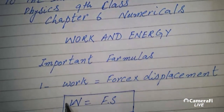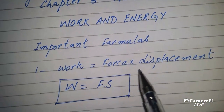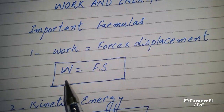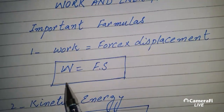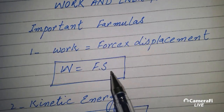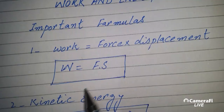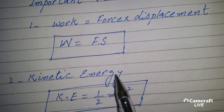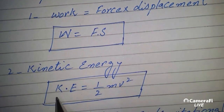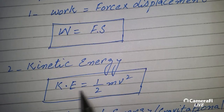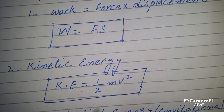Important formulas: Work is force multiplied by displacement, represented as W = Fs. Number 2 is kinetic energy, represented as KE. KE equals half mv squared.